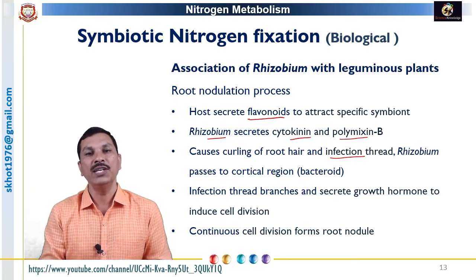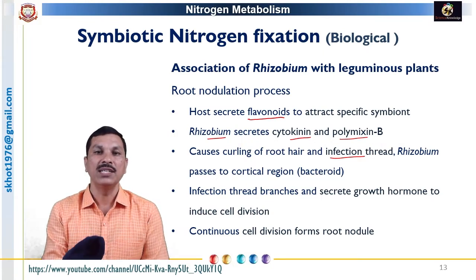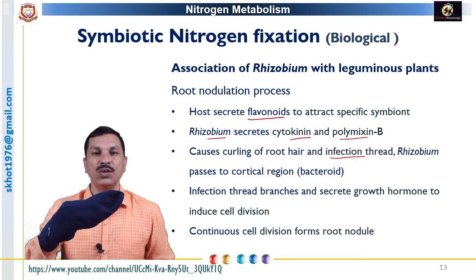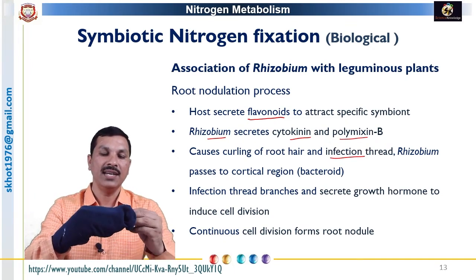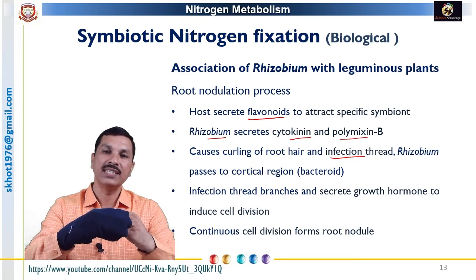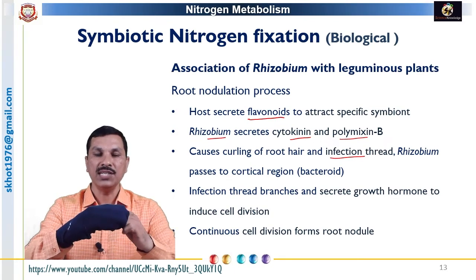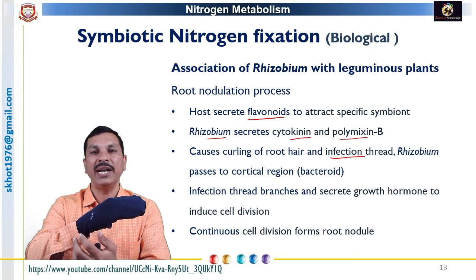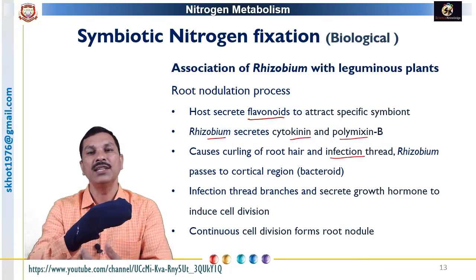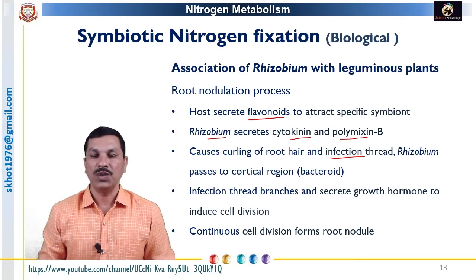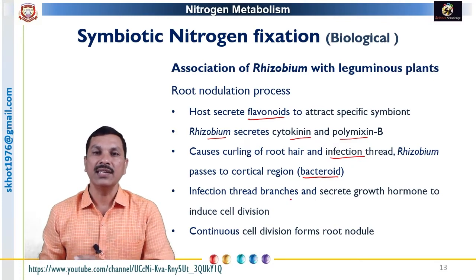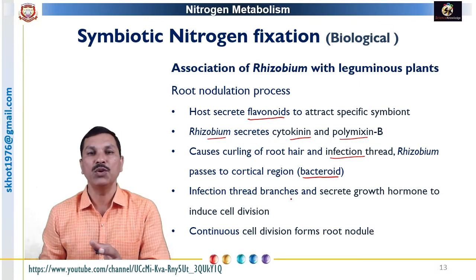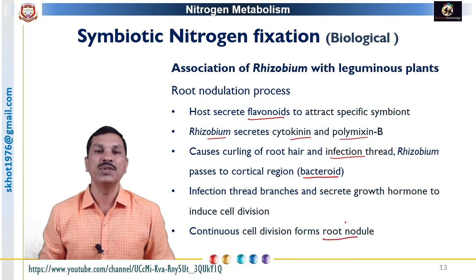The infection thread is produced by invasion of the bacteria into the root hair. This is not penetration — rather, the root hair turns its outer side inward, and the bacteria travel through this folding, which is called invasion. The invasion reaches up to the cortical region, where the bacteria are liberated and set free. In the cortex, the diazotrophs replicate rapidly and produce imperfect bacteria called bacteroids. The bacteroids initiate cell division in the root cortical zone, resulting in the formation of nodules.